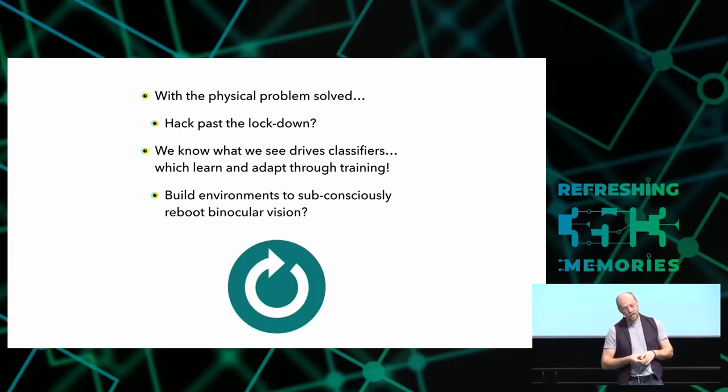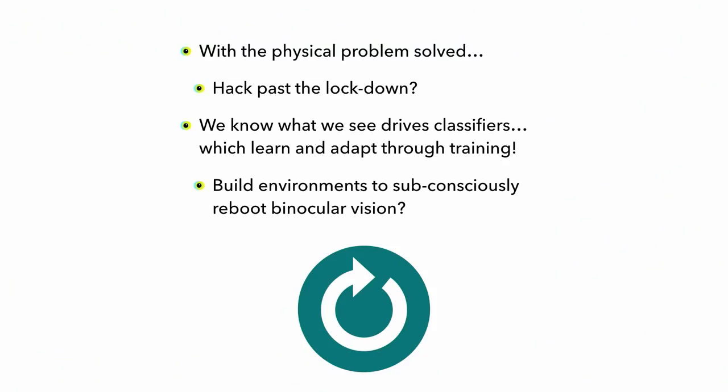Because these headsets do something very useful. It's less about the virtual reality and it's more about the ability to very precisely target each eye and control what we can present to it at a very low cost. So what if, after the physical problem's been solved, we could hack past that lockdown? We know that these classifiers in the brain, these structures, these optical dominance columns, we know that they learn and they adapt through training. We know that they're flexible and plastic. So can we build environments that can subconsciously reboot that binocular vision?